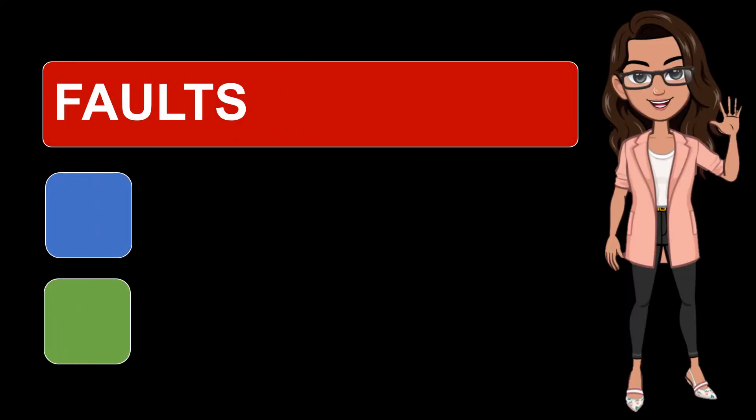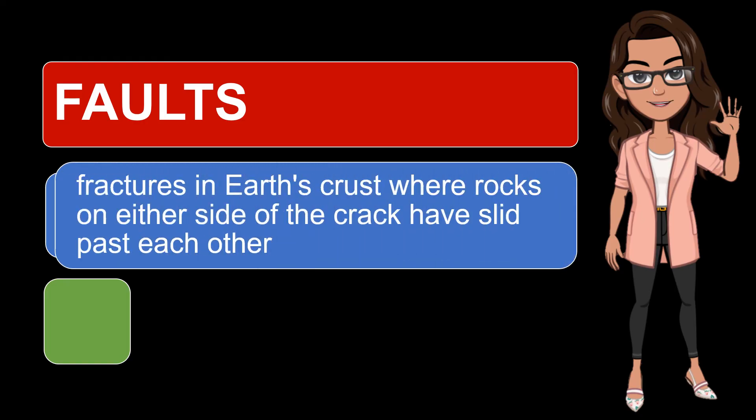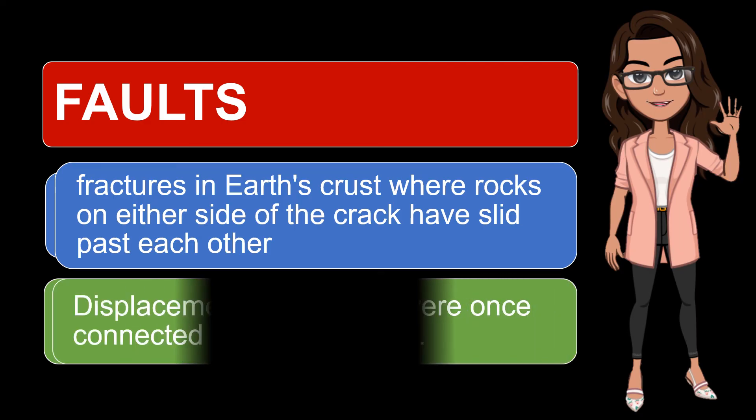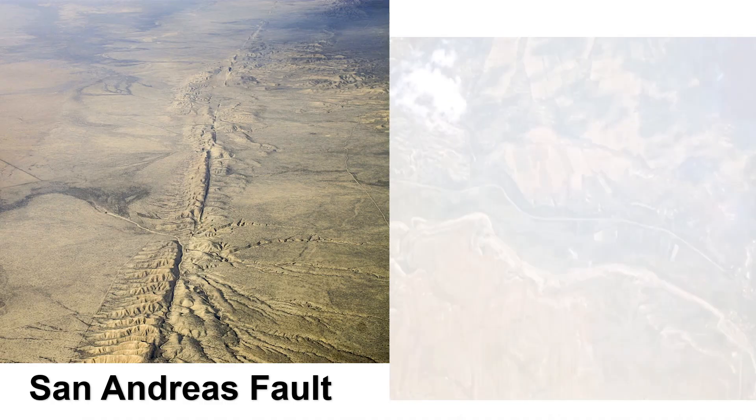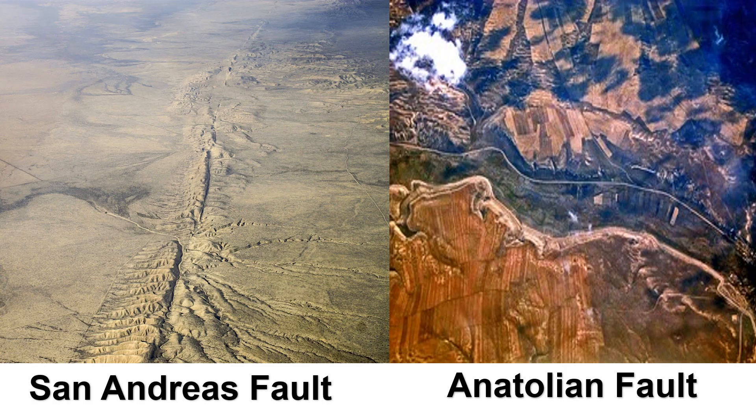If the pressure or compression that is applied to a rock undergoing a fold is greater than the internal strength of the rock, then the rock will fracture. This is how faults are formed. Faults are fractures in Earth's crust where rocks on either side of the crack have slid past each other. Faults are defined as the displacement of rock that were once connected along a fault line. Sometimes the cracks are tiny, as thin as hair, with barely noticeable movement between the rock layers, but faults can also be hundreds of miles long, such as the San Andreas Fault in California and the Anatolian Fault in Turkey, both of which are visible from space.